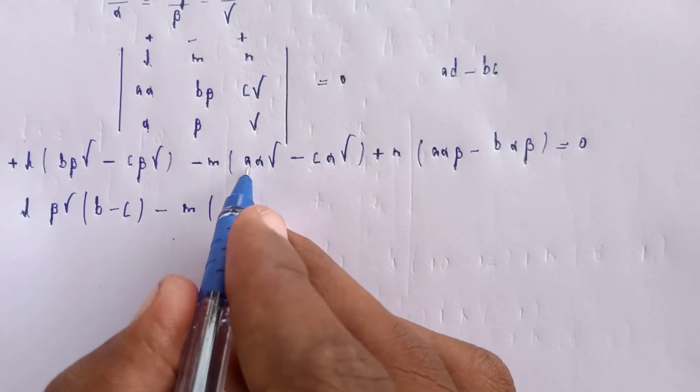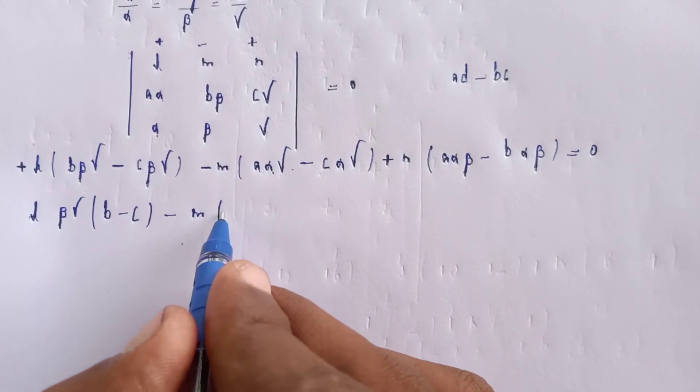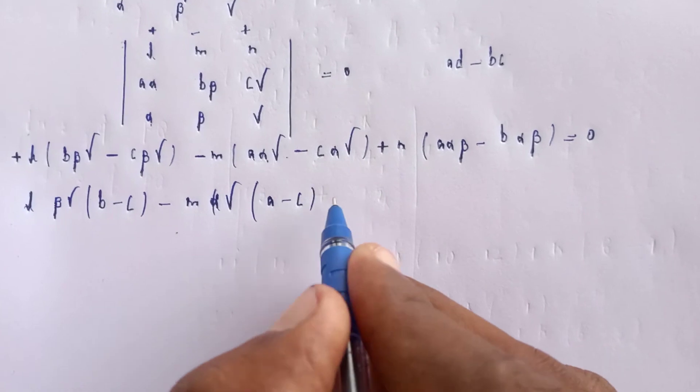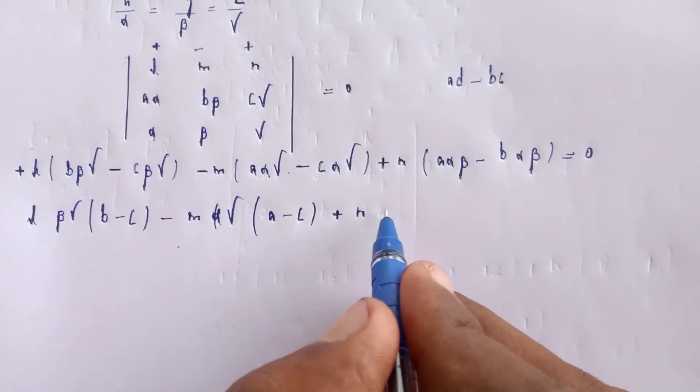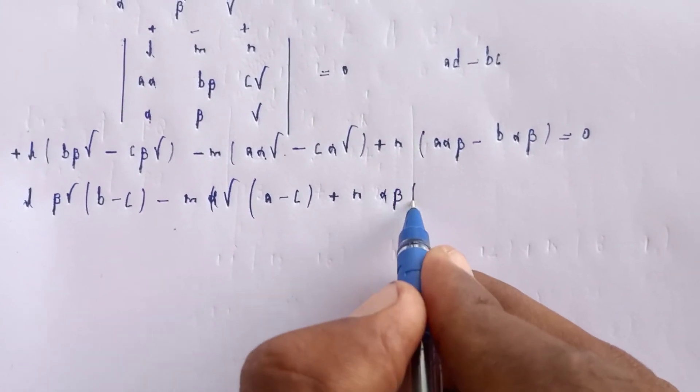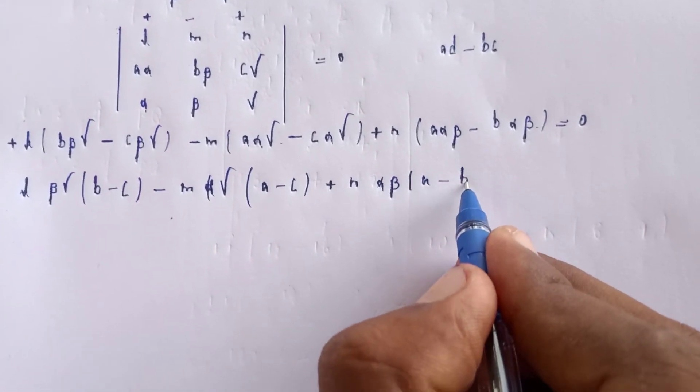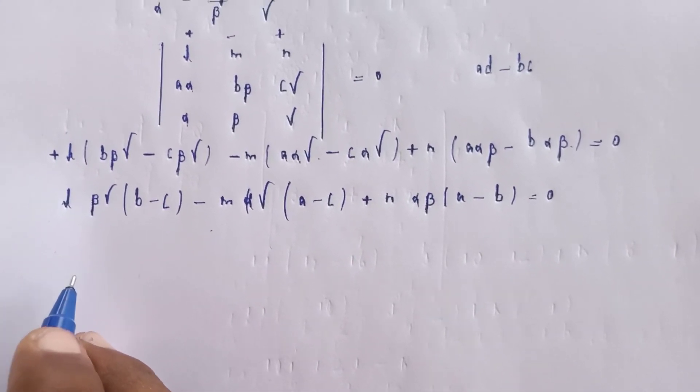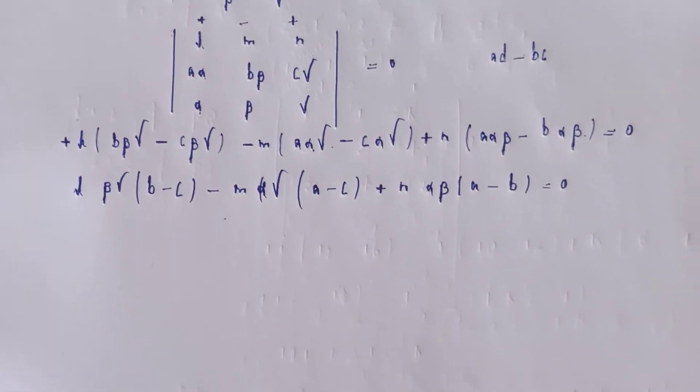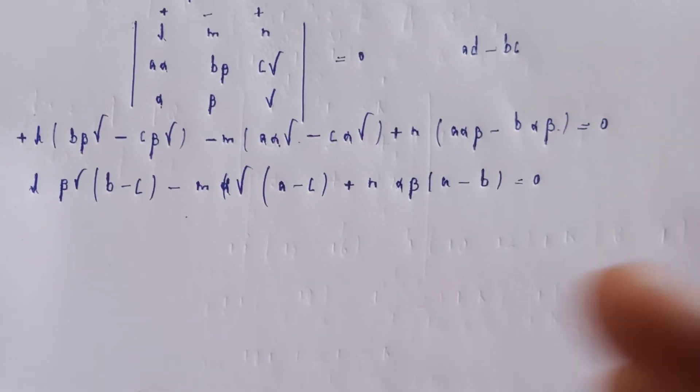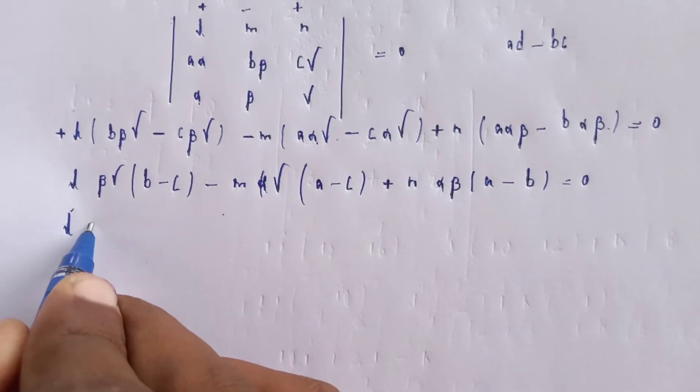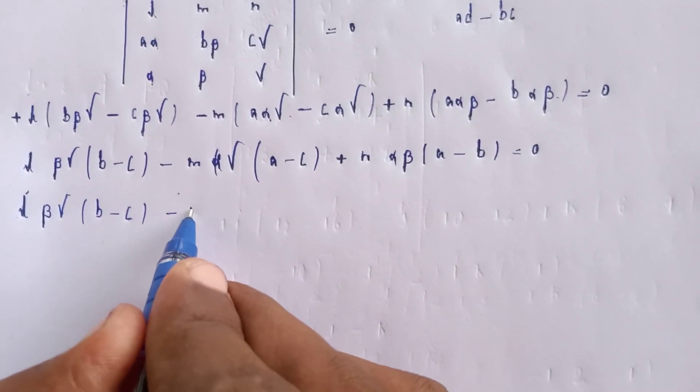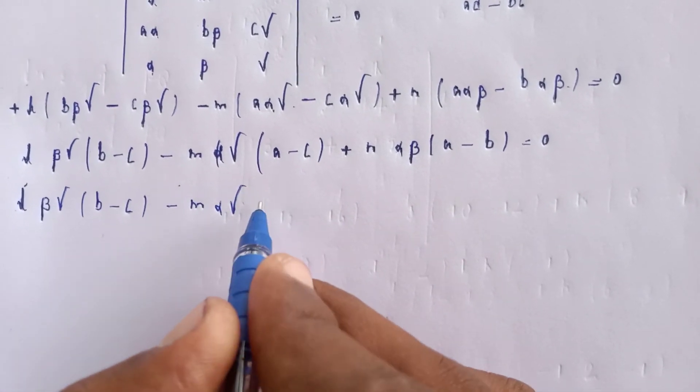Further expanding: α·γ terms, α·β terms, all with respect to (a - b). Taking common factors of γ and (a - b) from these expressions.